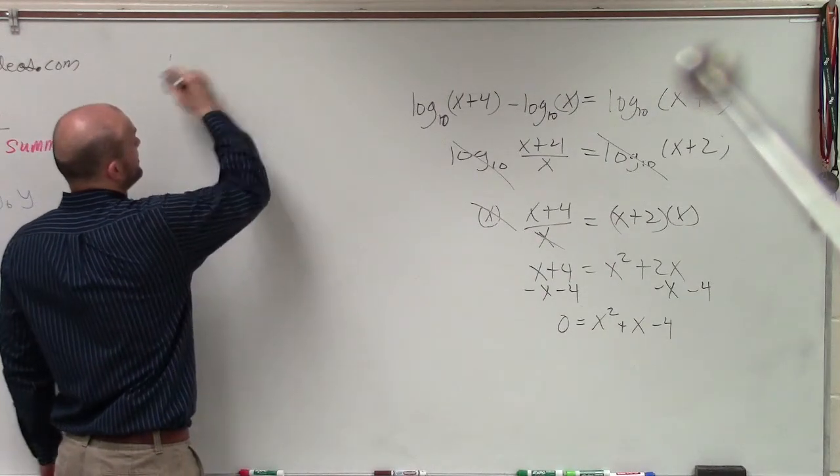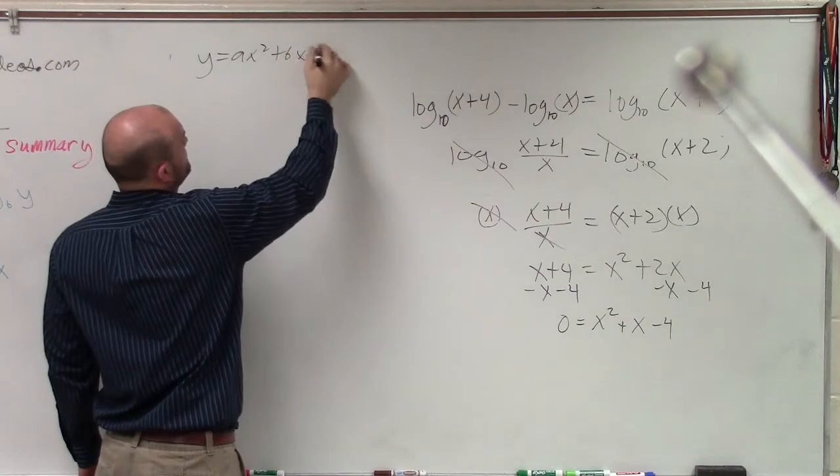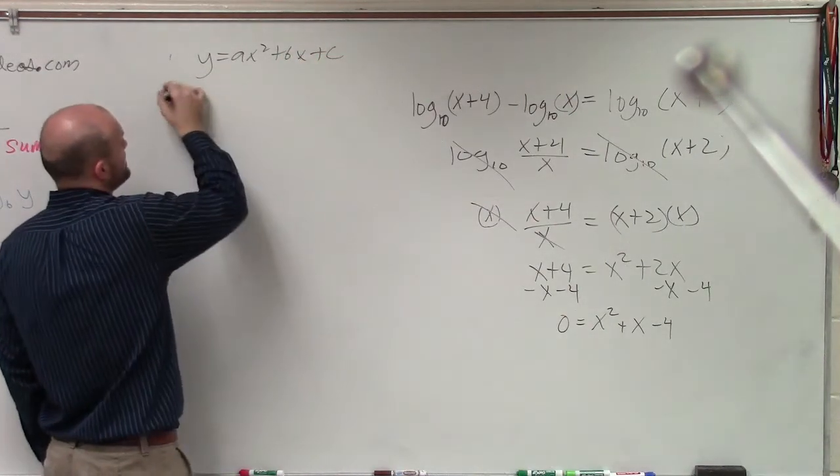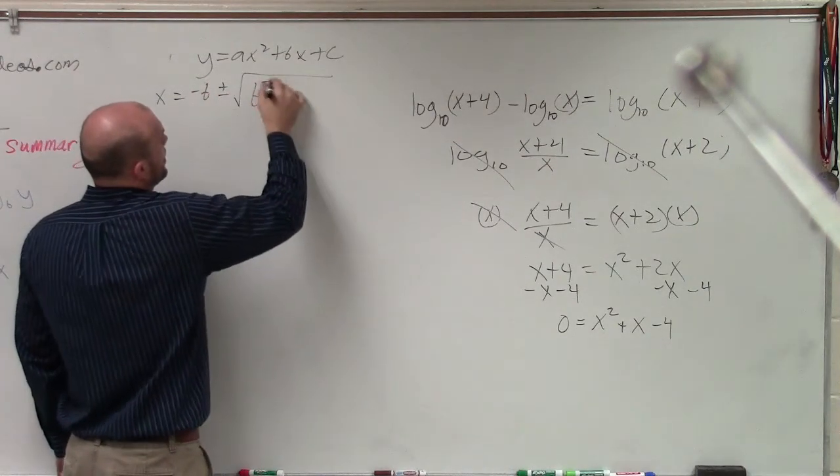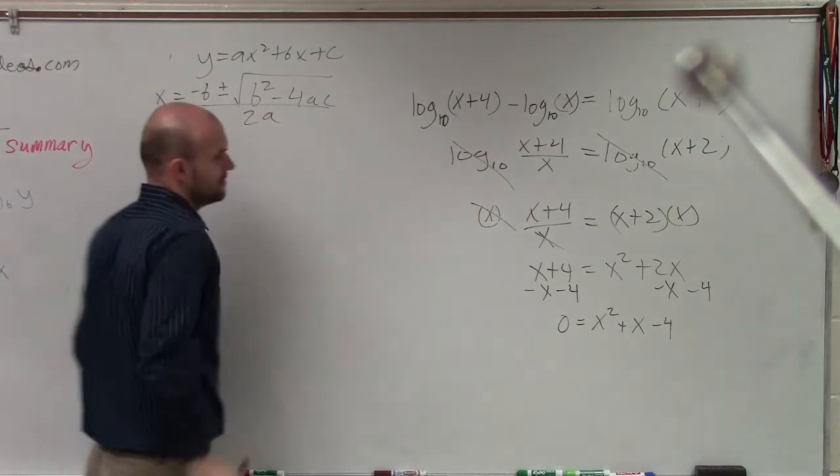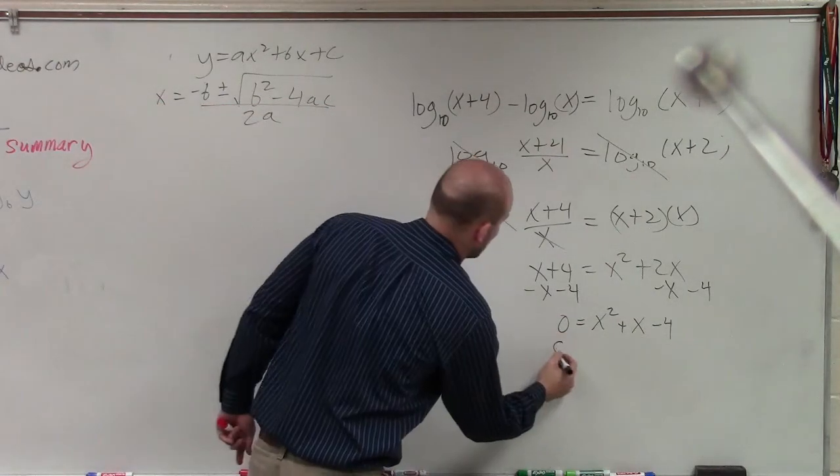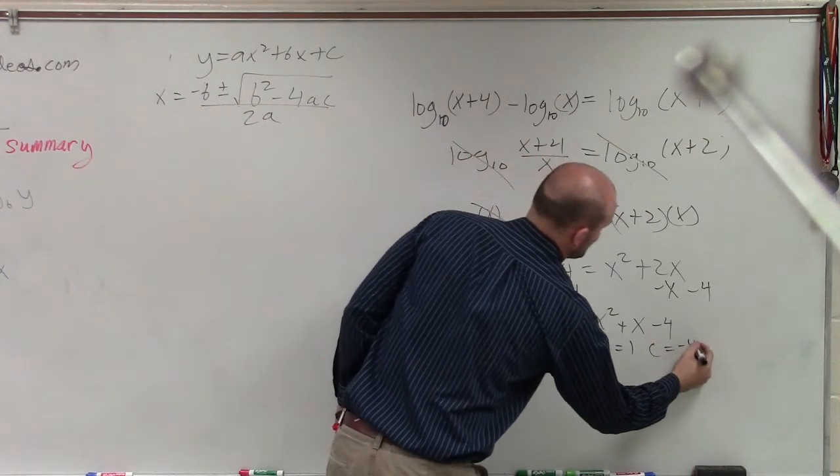Remember, quadratic formula, when you have something in the form of y equals ax squared plus bx plus c, therefore, it's x, the zeros are going to be x equals opposite of b plus or minus the square root of b squared minus 4 times a times c, all over 2a. So in this case, you can say a equals 1, b equals 1, and c equals negative 4.